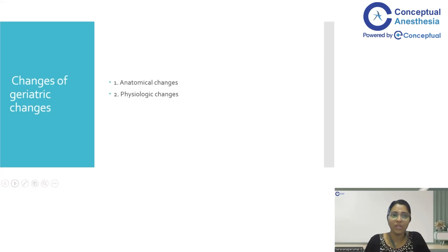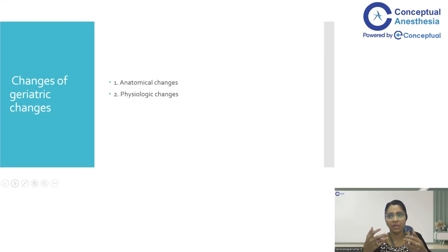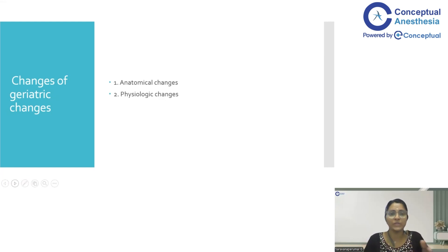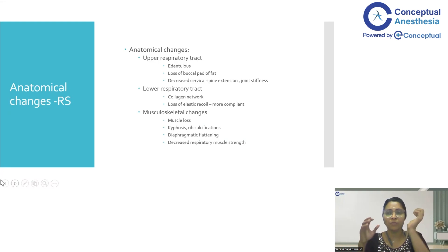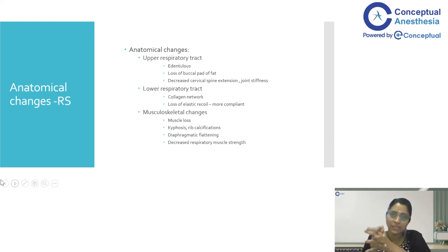Whenever you assess a geriatric patient across any system — whether it be the respiratory system or the cardiovascular system — whenever you talk about the physiology of changes, you always discuss both anatomical changes as well as physiological changes which occur. So first I will be discussing the physiological changes that happen in the geriatric population.